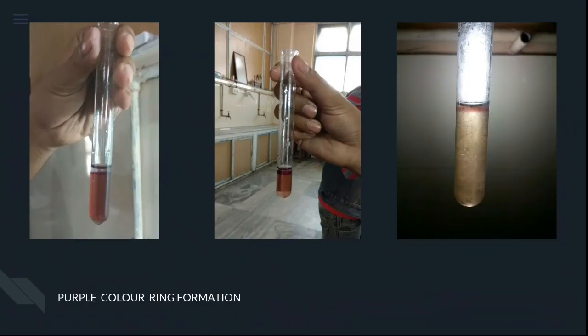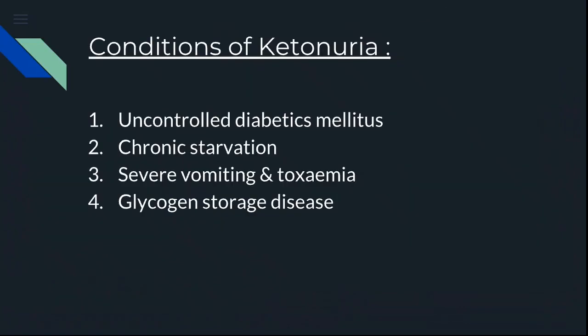Lab pictures are shown: the first and second samples both show ring formation and are positive. The conditions causing ketonuria include: uncontrolled diabetes mellitus, chronic starvation, severe vomiting and toxemia, glycogen storage disease, and many more conditions.